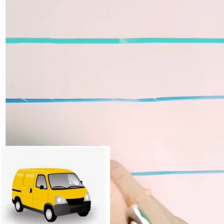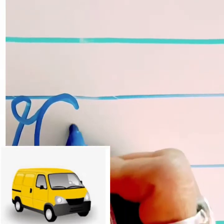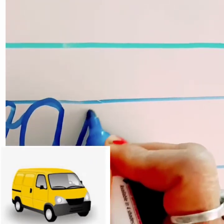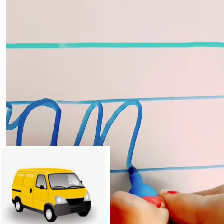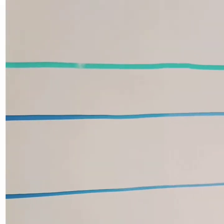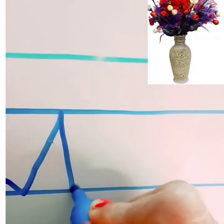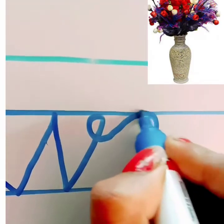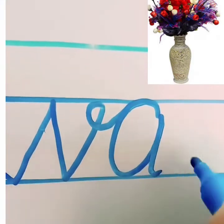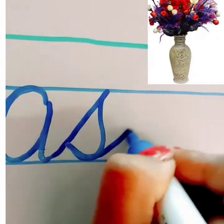Next is V for van. V, A, N, van. And V for vase, for flowers. V, A, S, E, vase.